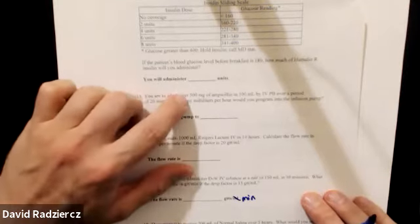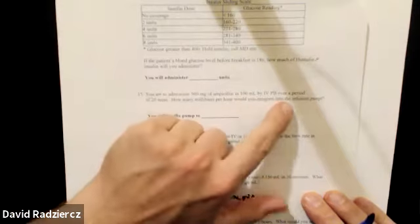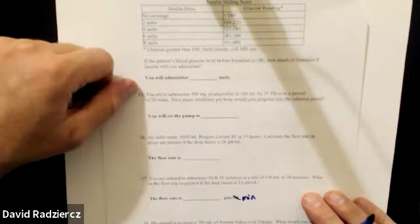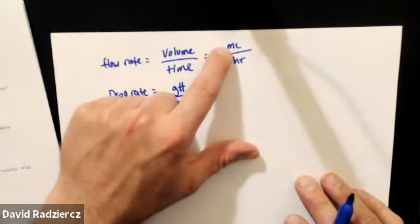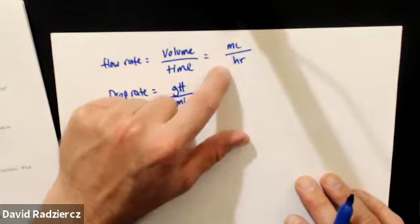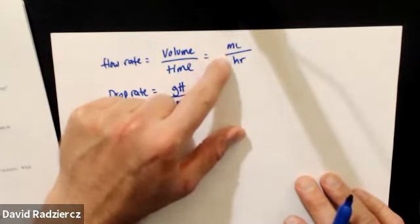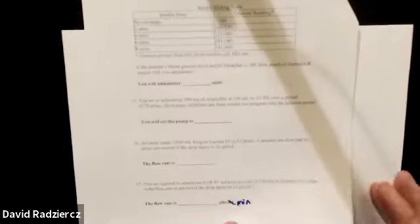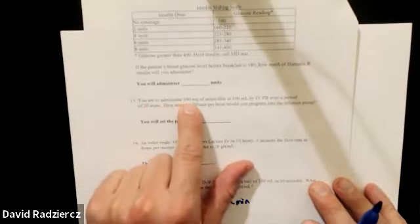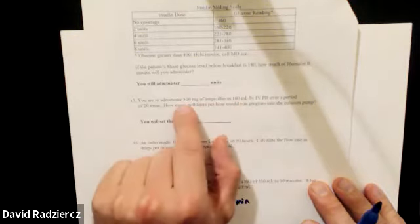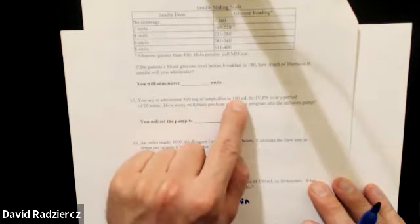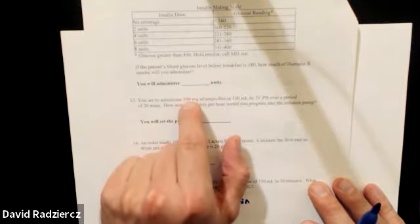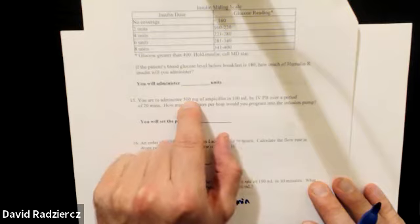Starting with question 15: administer 500 milligrams of ampicillin in 100 milliliters by IV piggyback over 20 minutes — how many milliliters per hour to program into the infusion pump? First, to calculate flow rate I need two pieces of information: volume in milliliters and a time. The 500 milligrams just tells you what drug is in the 100-milliliter bag. I do not need to know anything about the drug when calculating flow rates.